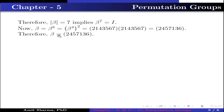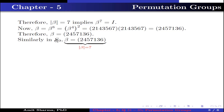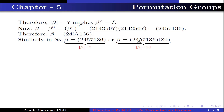Therefore, beta is the permutation (2, 4, 5, 7, 1, 3, 6). Similarly, in S9, beta is either the permutation (2, 4, 5, 7, 1, 3, 6) where the order of beta is 7, or beta is the product of permutation (2, 4, 5, 7, 1, 3, 6) and (8, 9), in which case the order of beta is 14.